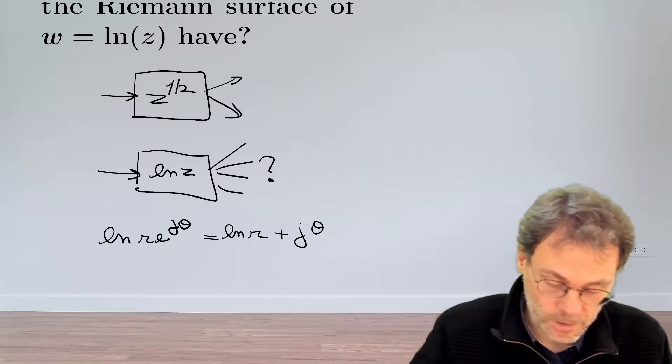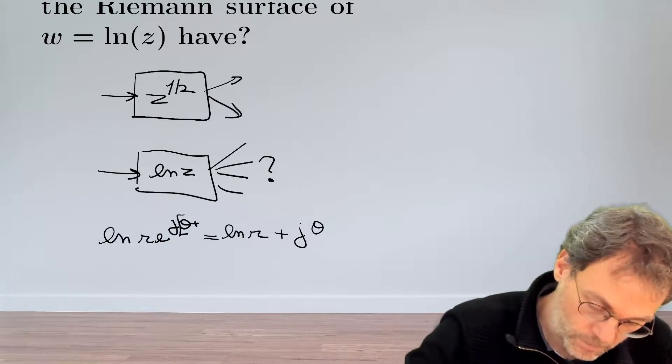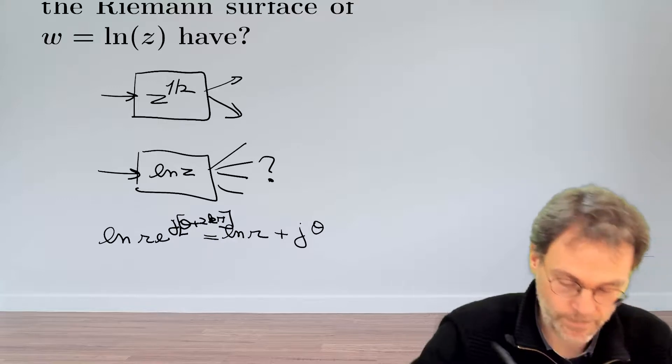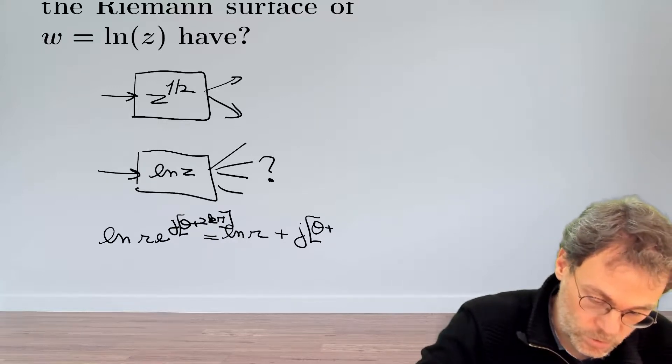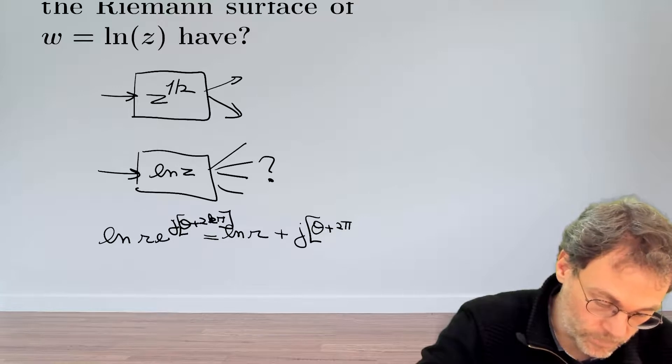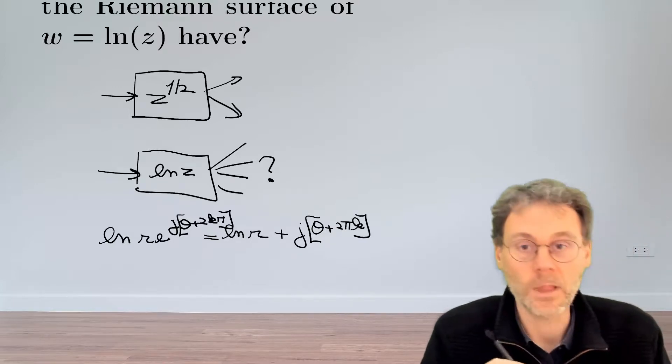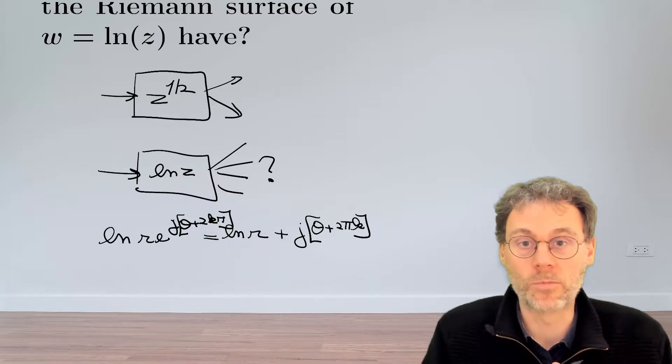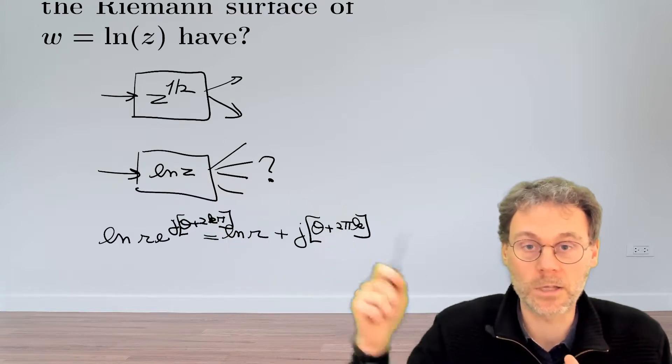But what happens at the output side? So if you replace here theta by theta plus an integer number of 2pi, then basically here at the output you also get these integer numbers of 2pi appearing. And it doesn't really matter how many times you add or subtract 2pi here, you will get a different result at the output.